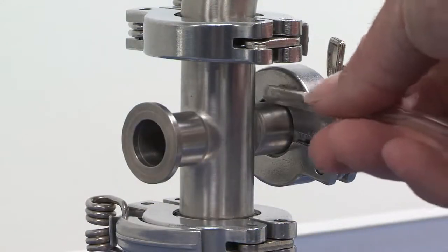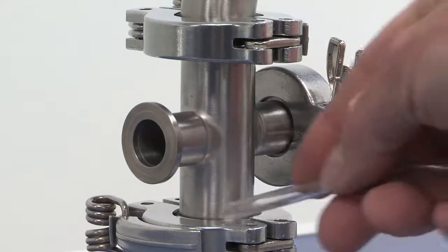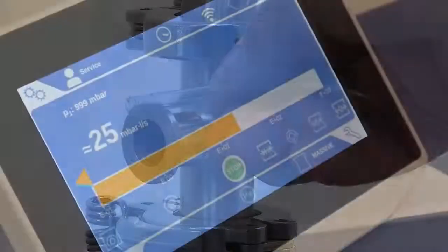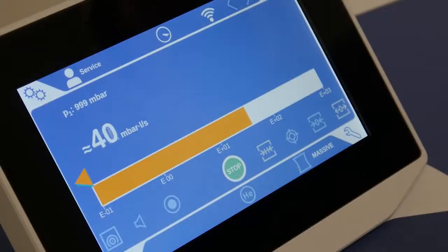We now probe by spraying helium to the potential leak locations. Once the spraying nozzle is close to the leak location, a clear signal on the leak detector can be observed.